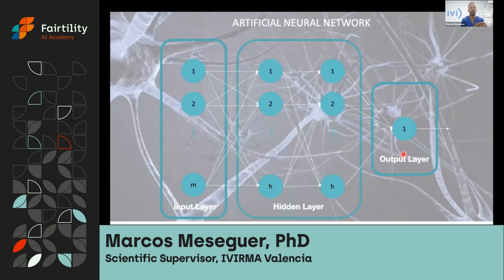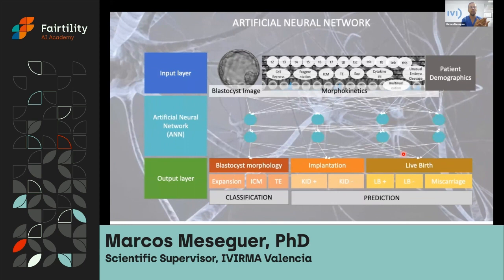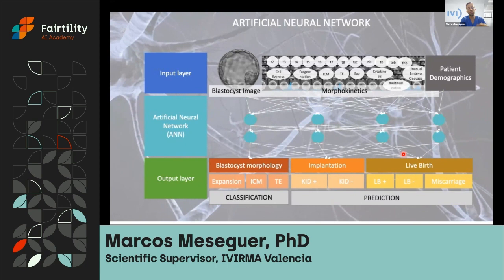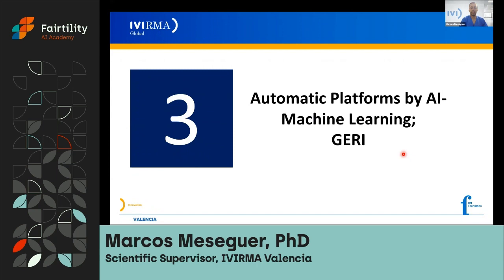Once we have this input data — variables coming from deep learning or machine learning — we have hidden layers and visible layers. The hidden ones are where calculations are done that, by combination, generate a prediction through a fully connected system of neural networks. The input in embryology could be blastocyst images, morphokinetics, or patient demographics. Then we can predict the morphology as embryologists do, or predict implantation, or maybe even predict live birth.